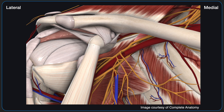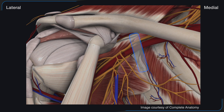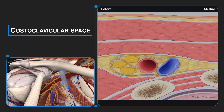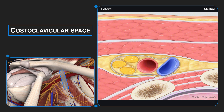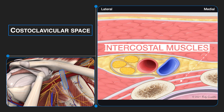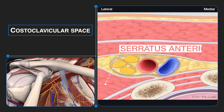To visualize the cords in the costoclavicular angle, the ultrasound transducer is positioned perpendicular to the clavicle at the midclavicular position. Relevant musculature includes the pectoralis major, subclavius, intercostal muscles, and serratus anterior.